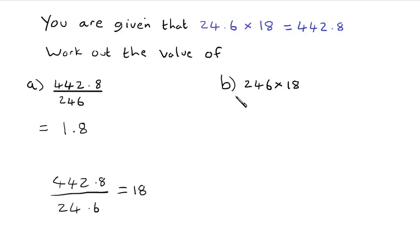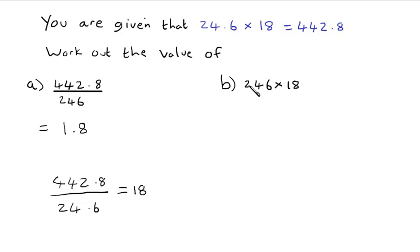For part b, we have a related multiplication: 246 × 18. We know that 24.6 × 18 = 442.8, and 246 is 10 times bigger than 24.6. So the answer will be 10 times bigger than 442.8, which means the answer is 4428.